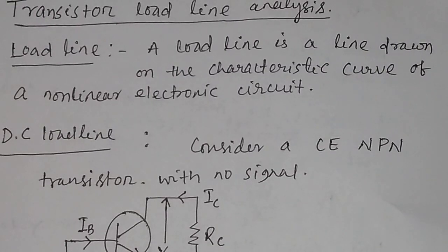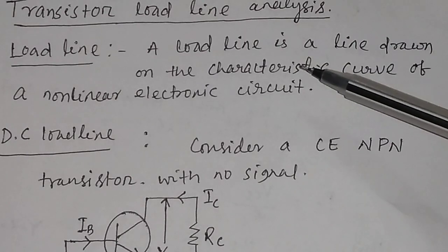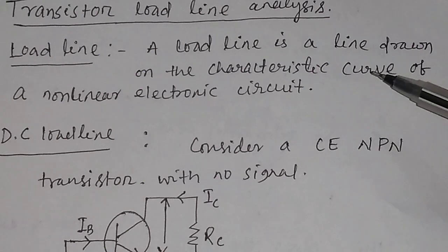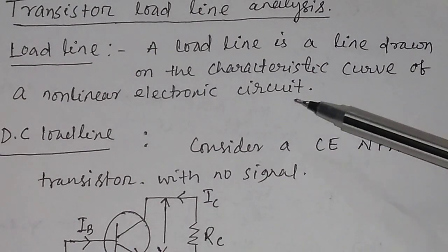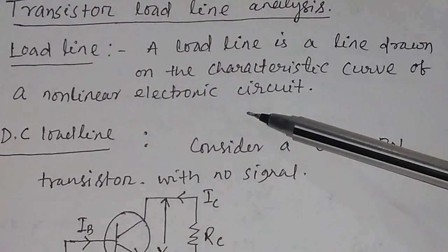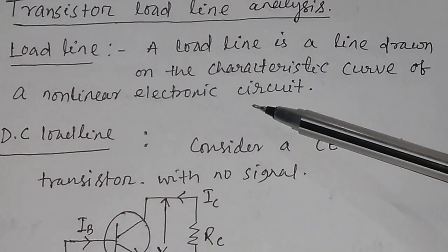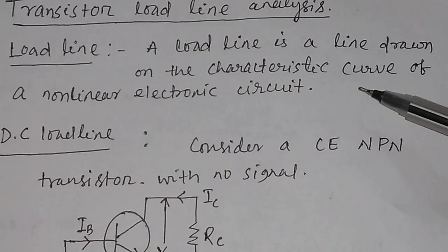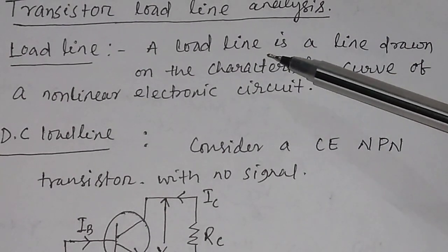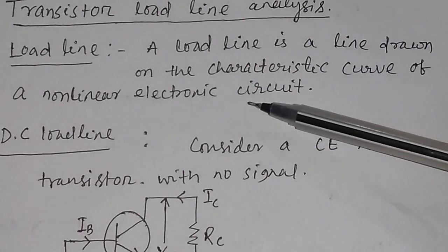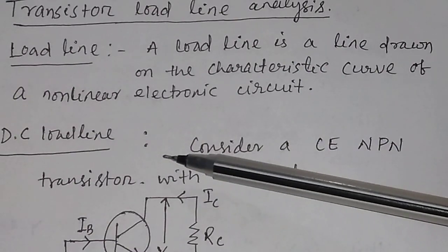What is a transistor load line? A transistor load line is a load line in a transistor which is drawn on the characteristic curve of a non-linear electronic circuit. We know a transistor is a non-linear electronic circuit, so while drawing the characteristic curve you have to draw this load line. We will basically discuss about the DC load line in this video.